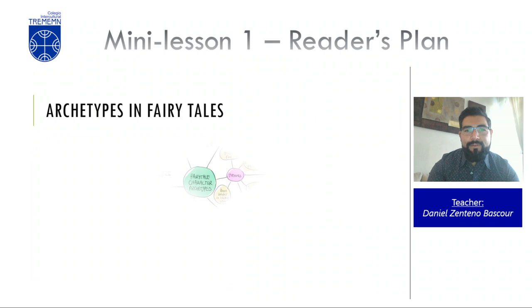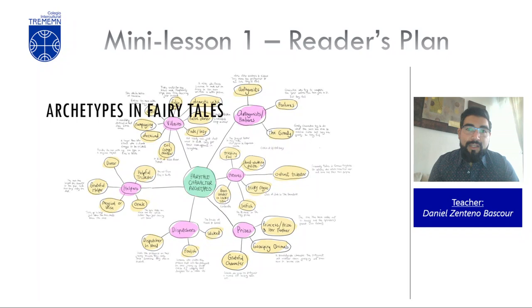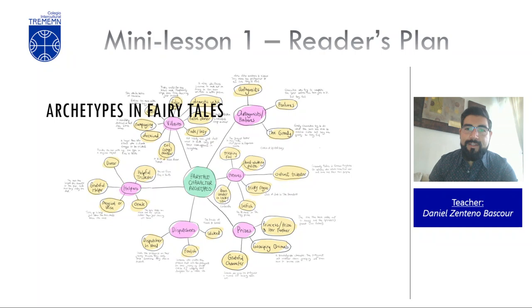Now let's look at the archetypes. An archetype is essentially a stereotype of a character in a fictional book. As you can see in the diagram, there are many different archetypes: heroes, prizes, dispatchers, helpers, villains, and antagonists or false heroes.